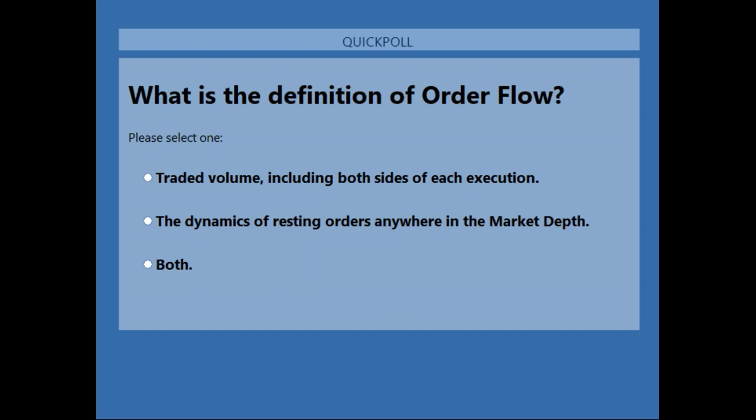So what is order flow? Is it the traded volume — both buying and selling? Or the resting limit orders in the depth of market? Or a combination of both? The answer is it's a combo. About a third thought it was traded volume, a few thought it was just resting orders, and about half said both. Traditionally, order flow is known as just the traded volume — the transactions that occurred — because that was the only data available. When reading the tape, you're looking at transactions only.